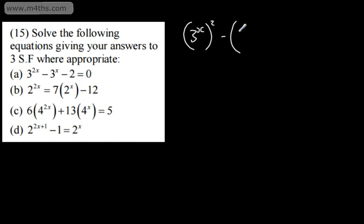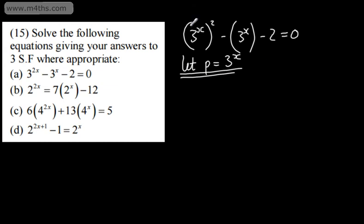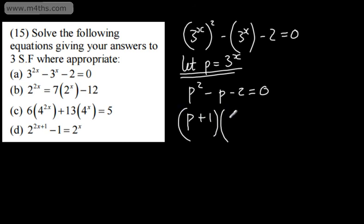So minus one lot of 3 to the x minus 2 is equal to 0. At this stage, I'm going to use a substitution and let p be equal to 3 to the x. Therefore, we'll have p squared minus p minus 2 is equal to 0. I'm going to solve this quadratic in p. It looks like it will factor, so we're going to have p plus 1 times p minus 2 is equal to 0. So we can see that p is equal to negative 1 or p is equal to 2.